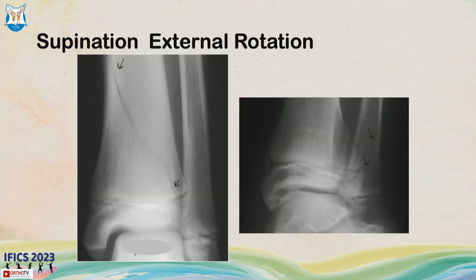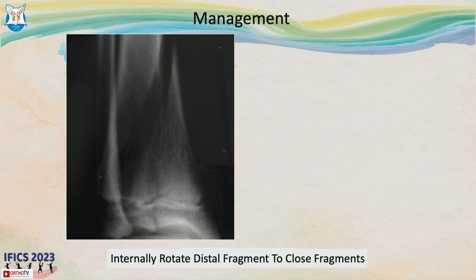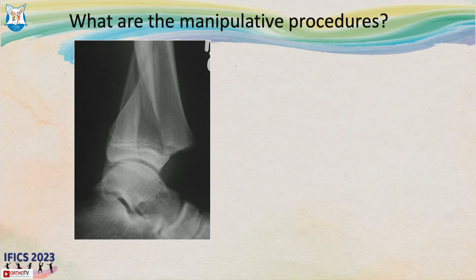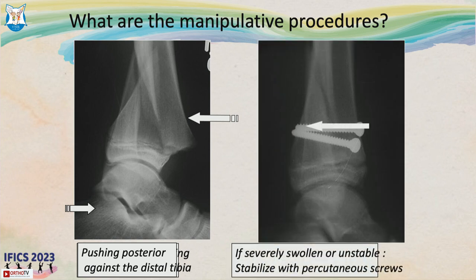Supination external rotation injury is a spiral pattern — reverse the mechanism by internally rotating the distal fragment and manage in cast for four to six weeks. Supination plantar flexion involves forced plantar flexion where the proximal fragment pushes against the extensor tendons. The manipulative procedure reverses the mechanism of injury, and if you cannot hold reduction in plaster, anteroposterior percutaneous screws are a perfectly reasonable option.